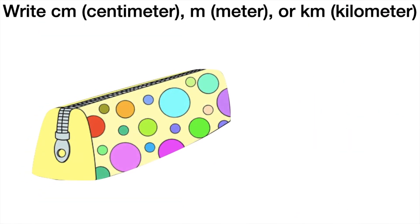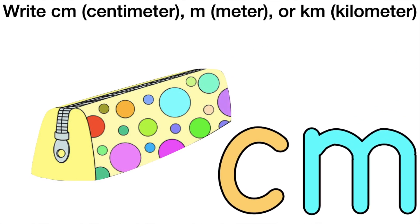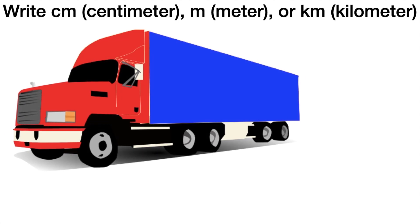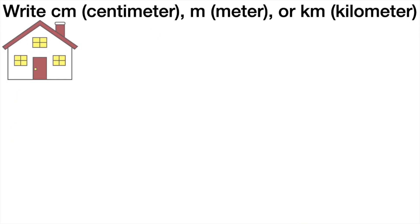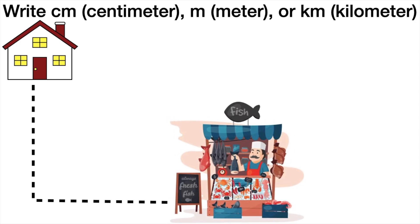How about this one? The length of the pencil case. Good job, children — it's meter. How about this one? The distance from your house to a wet market. Good job — it's kilometer.